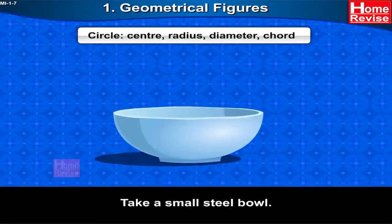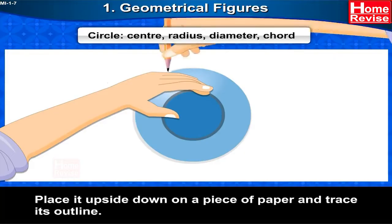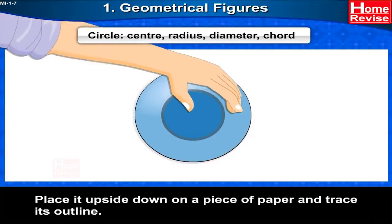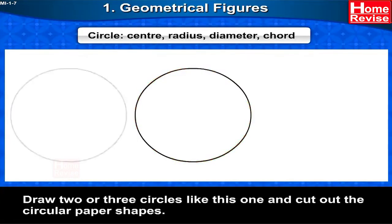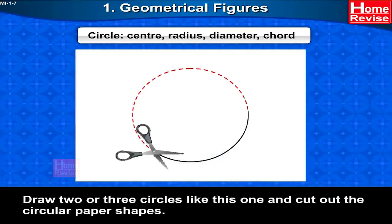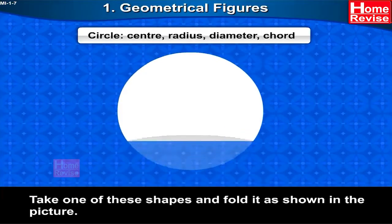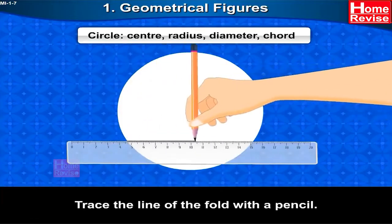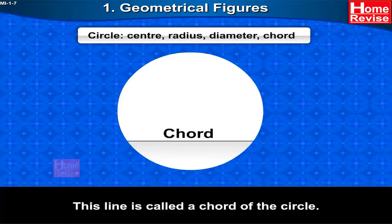First, let us make a perfect circle. Take a small steel bowl, place it upside down on a piece of paper, and trace its outline. Remove the bowl — the figure you get on the piece of paper is a circle. Draw two or three circles like this and cut out the circular paper shapes. Take one of these shapes, fold it as shown, and trace the line of the fold with a pencil. This line is called a chord of the circle.